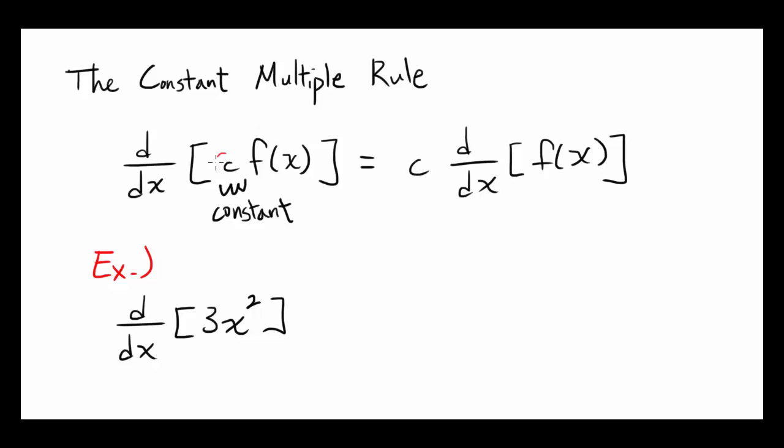What this is saying is that if you have a constant times a function and you're taking the derivative of the entire thing, you can get this c out of the way, take the derivative of the function, and multiply c to it.